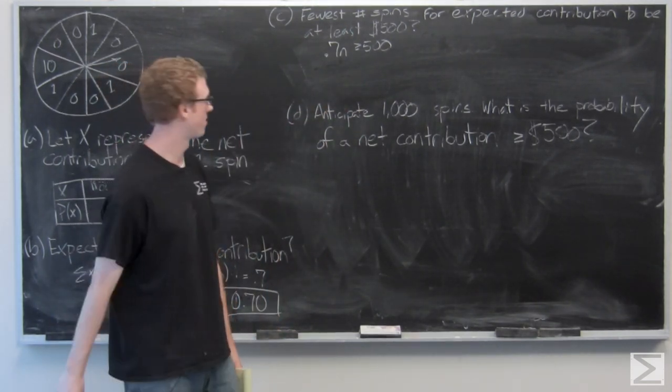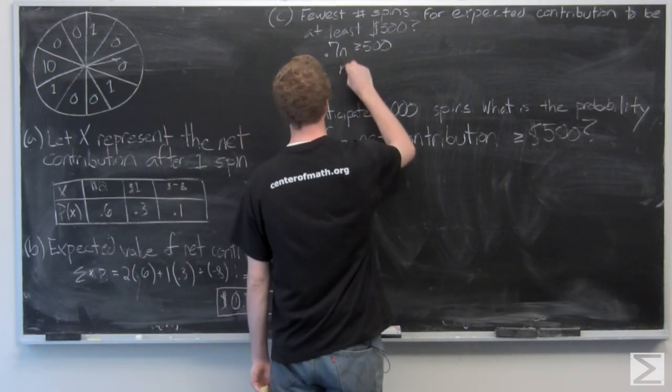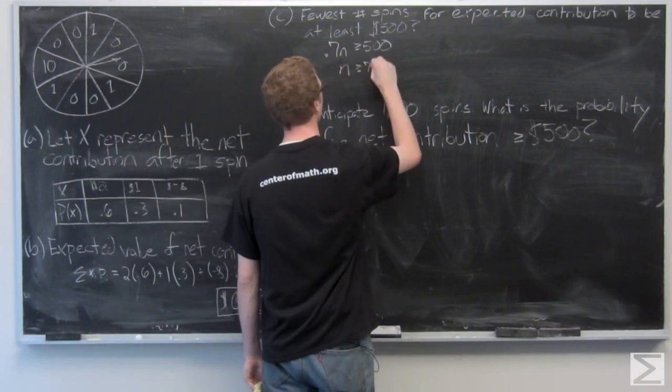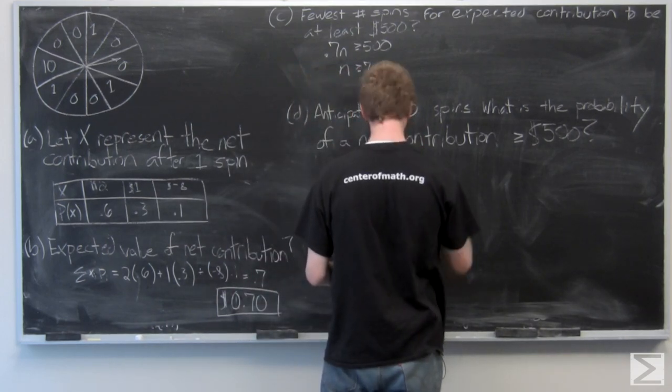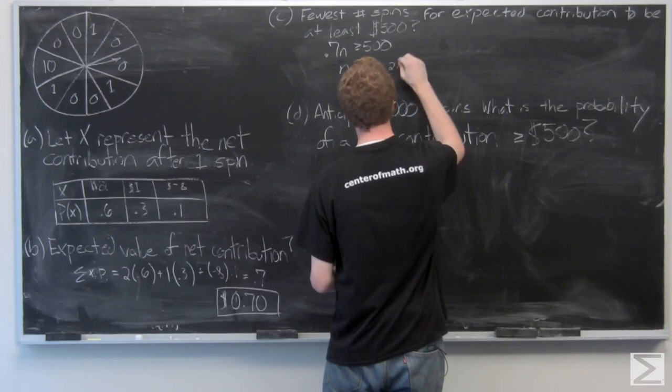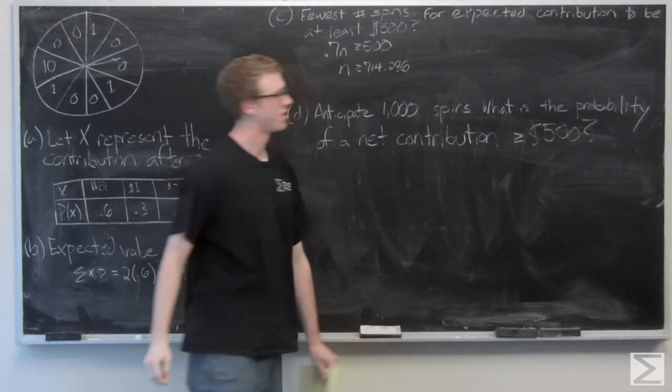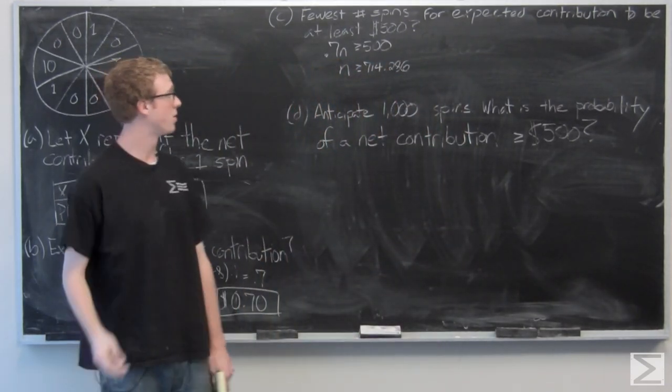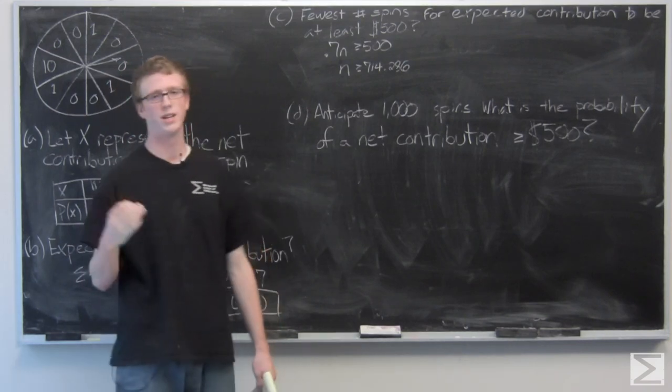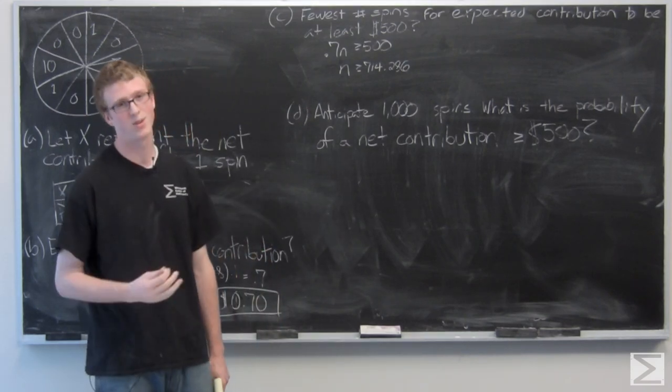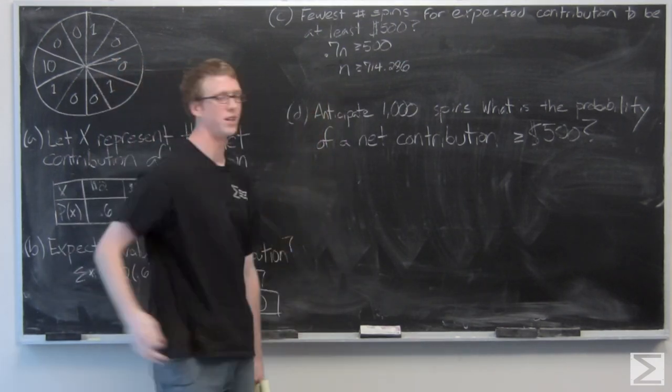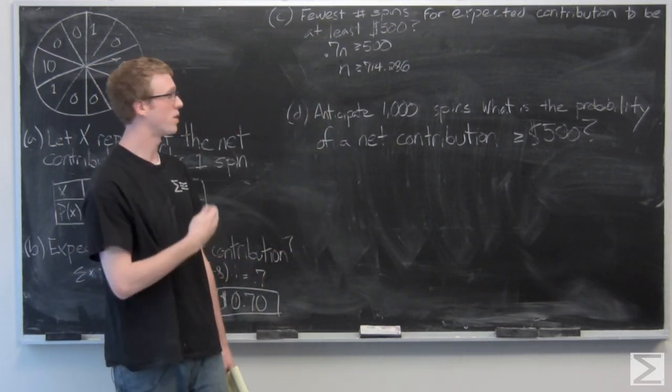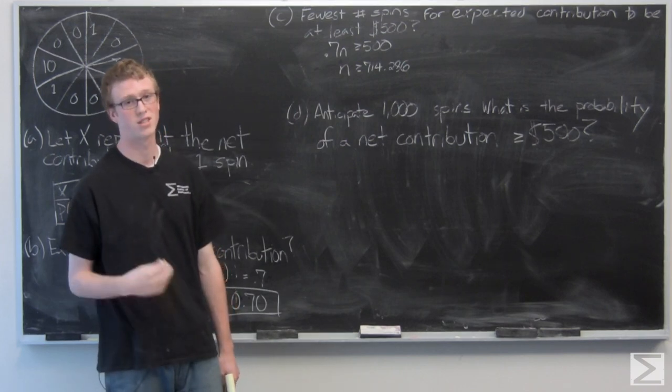And now all we need to do is simple division. So we have n greater than or equal to 714.286 spins. We can't have a decimal spin, so greater than or equal to 714 point something is actually going to be greater than or equal to 715.